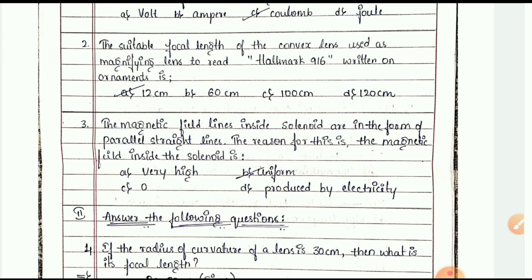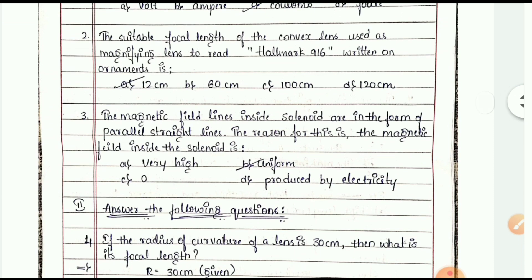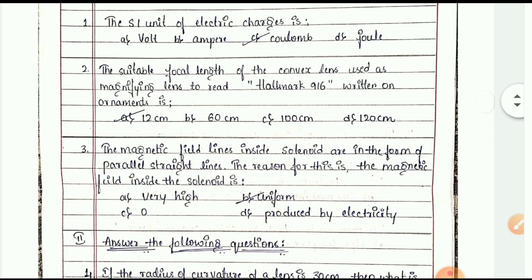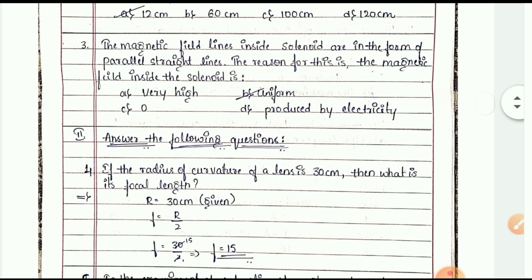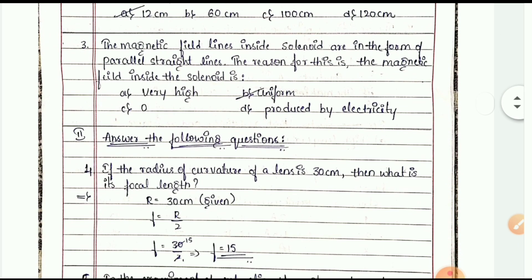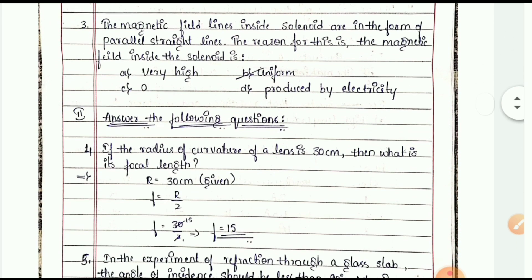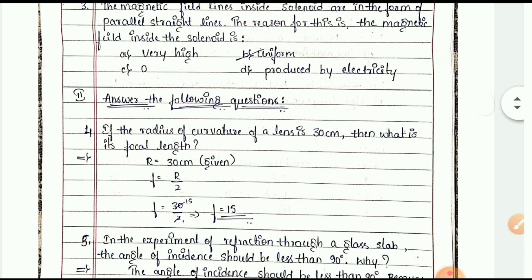The magnetic field lines inside a solenoid are in the form of parallel straight lines. The reason for this is that the magnetic field inside the solenoid is uniform. So the first three were MCQ type questions.